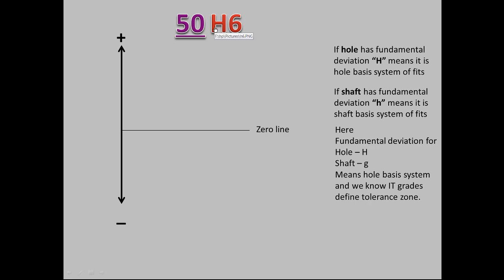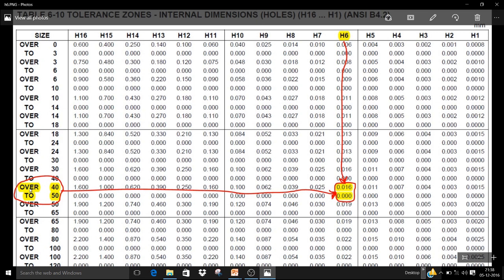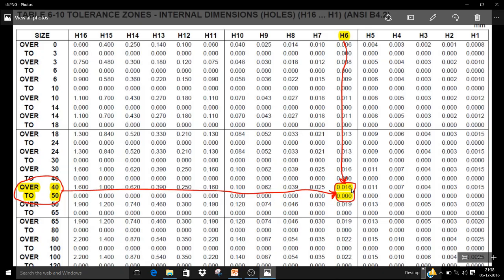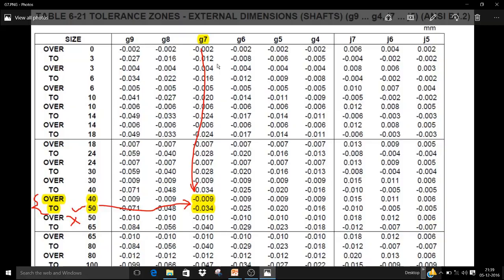For H6: capital H is the fundamental deviation for the hole and 6 is its tolerance grade. Looking at the chart for diameter step 40 to 50, the lower limit is 0 microns and the upper limit is 16 microns. The lower limit of 0 means it matches the zero line — there is no deviation — and the upper limit deviates by 16 microns.